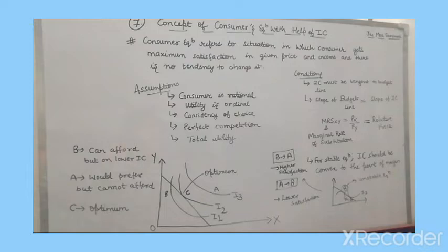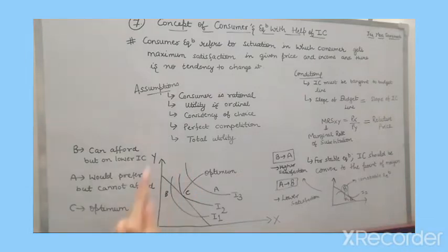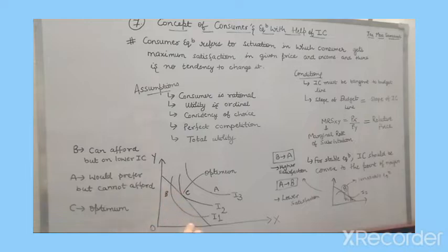What are the conditions? At C point, consumer equilibrium exists — C point is the consumer's optimum. Why? Condition number one is satisfied: the indifference curve is tangent to the budget line. Condition satisfied. Second condition: the slope of the budget line and the slope of the indifference curve are equal. Two conditions satisfied.